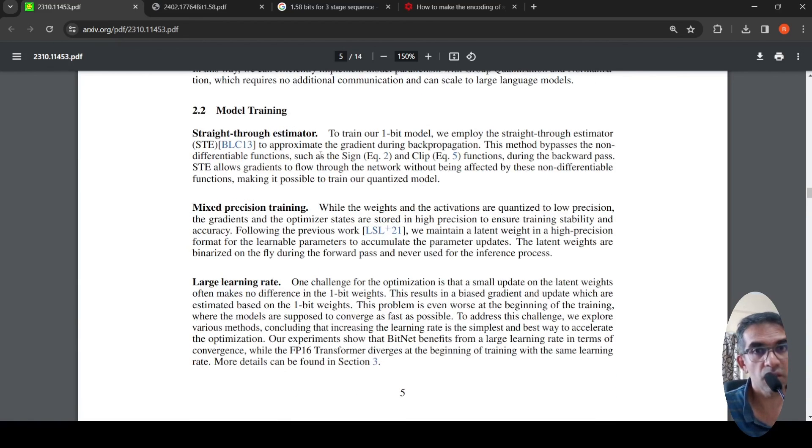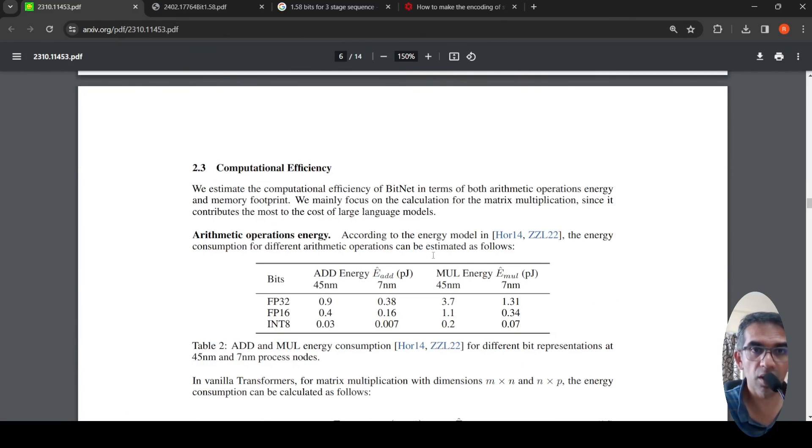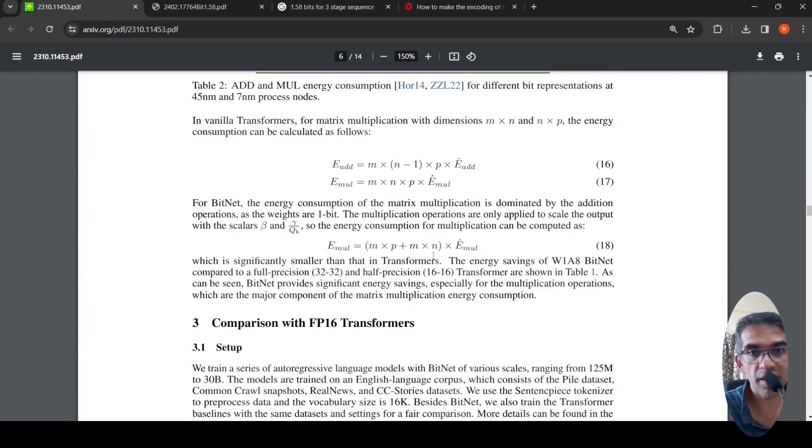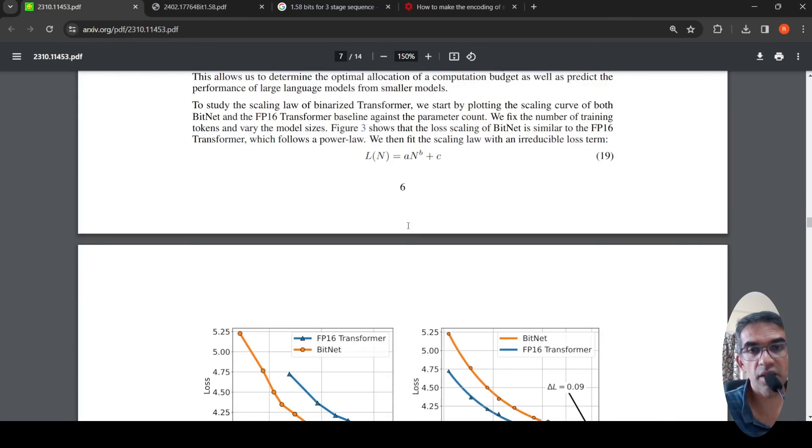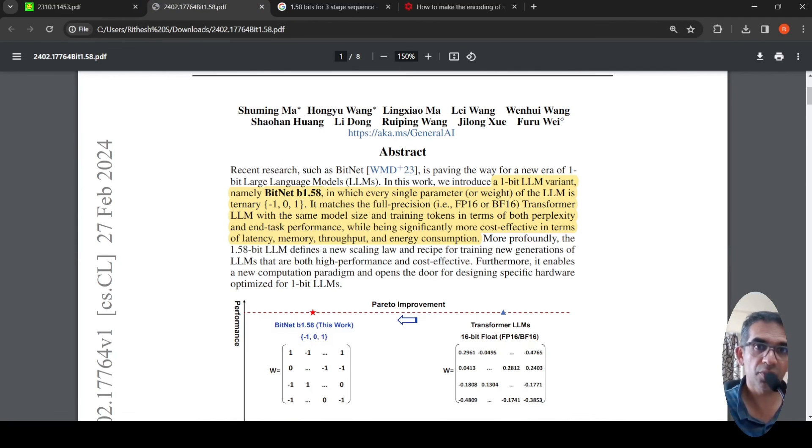So they use something called as a straight through estimator for approximating the gradient during back propagation. How do you do mixed precision training? And about learning rates and other things are explained in detail in this paper. So probably you need to go through this paper to fully understand what is this BitNet architecture. And then you can much more appreciate what has been done in this particular paper.